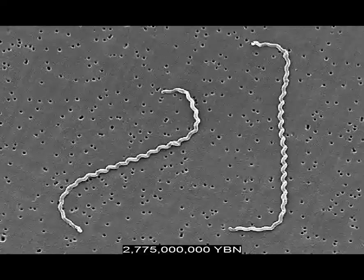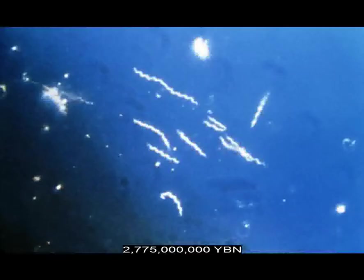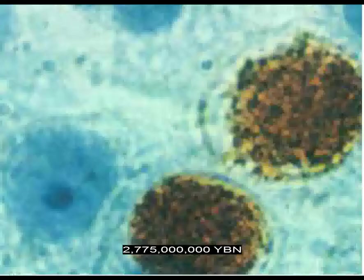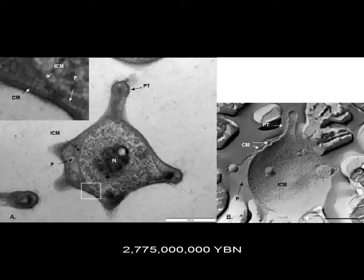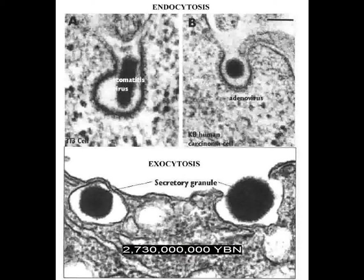Eubacteria Spirochetes — syphilis, Lyme disease. Eubacteria Bacteroidetes. Eubacteria Chlamydiae evolve. Eubacteria Chlorobi — green sulfur bacteria. Eubacteria Verrucomicrobia. Endo and exocytosis evolve. Cells can now eat other cells. In endocytosis, the plasma membrane folds inward to bring substances into the cell. In exocytosis, substances contained in vesicles are released from the cell.